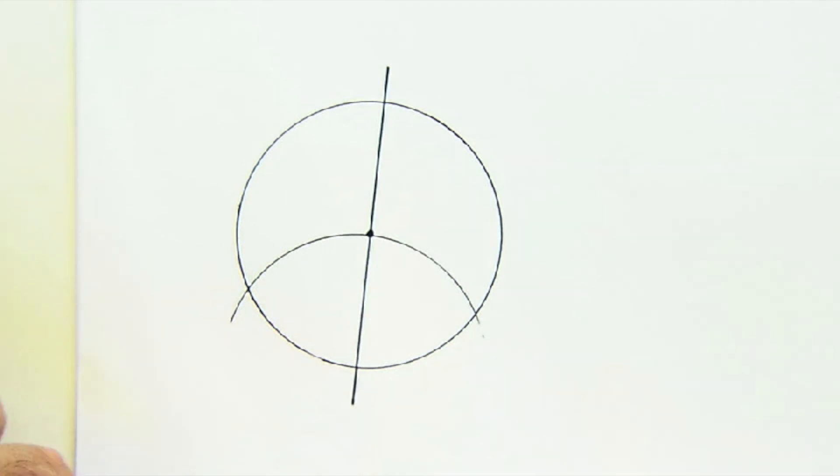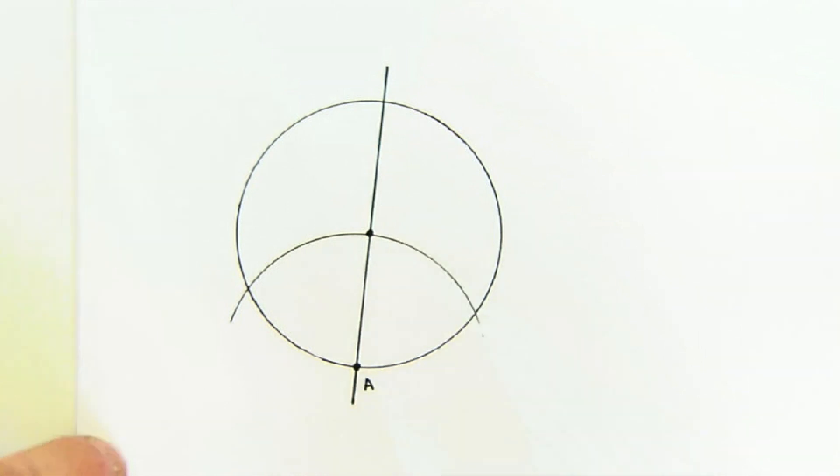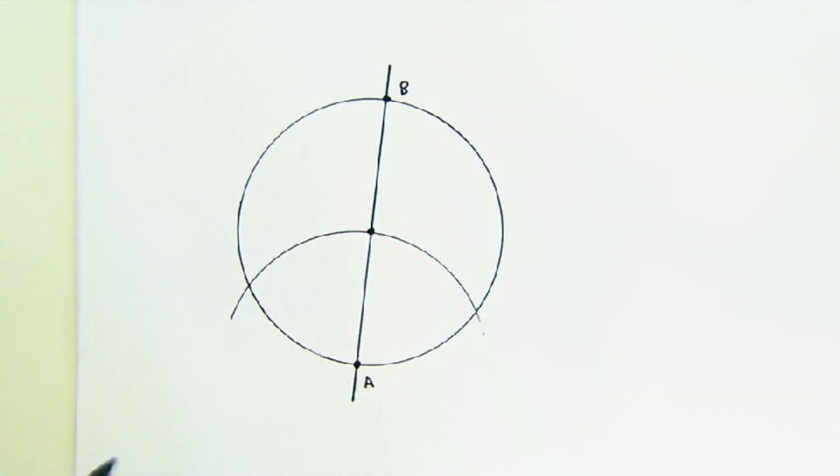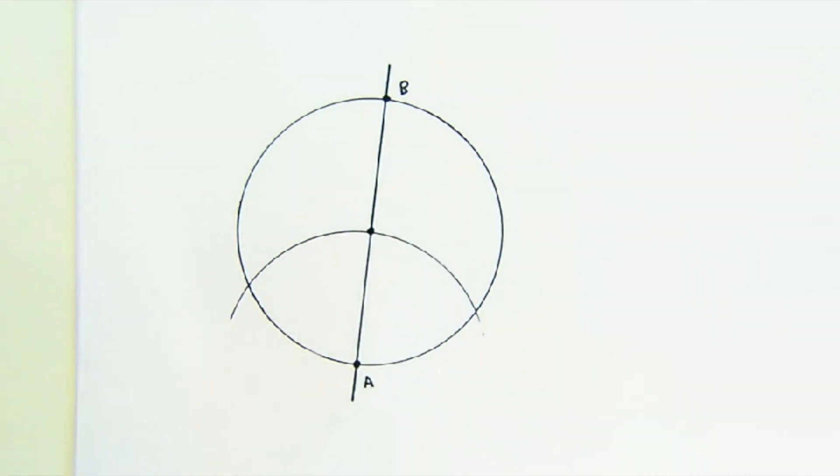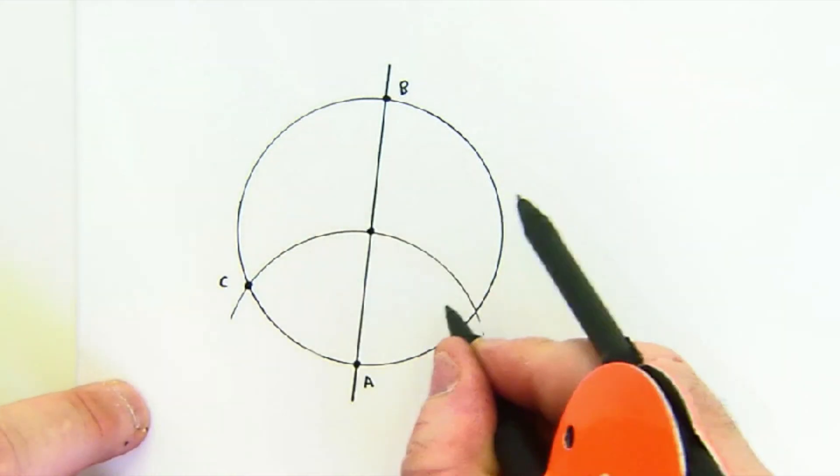So I created my diameter. Let's call this A for now, we'll call this B. By using the original radius, I created a new arc and it formed two new points.